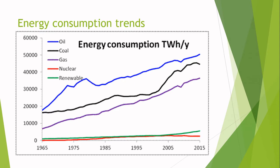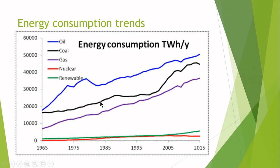Let's see what are the latest energy consumption trends. The blue graph on the top indicates the curve for energy consumption created using oil — or to be precise, fossil fuel: petrol, diesel, and natural gas. Most of our energy consumption is fulfilled by the use of oil, and the poisonous gases produced by burning oil have a very harmful effect on our environment. The black graph line indicates the energy consumption with respect to coal, which is on the second number.